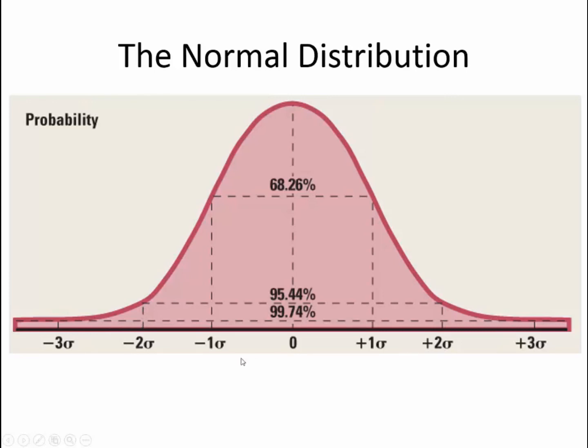Between plus and minus 2 standard deviations, we have 95.44%. So that means that outside of plus or minus 2 standard deviations, we have 100 minus 95.44, which would be 4.56%.